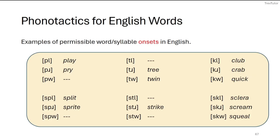Here are some examples of syllable or word onsets in English — we call these onsets if they occur at the beginning of a word or syllable. We can see that there are some gaps. For instance, we can do 'pl' and 'pr,' but we can't do 'pl' with a voiced stop. Some kids when they first learn English might say things like 'pway' instead of 'play,' but adults don't use that cluster to start words in English.